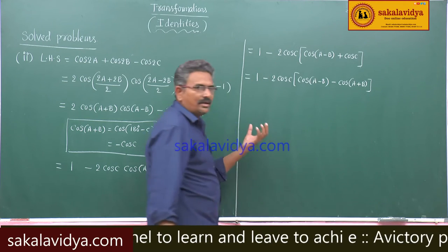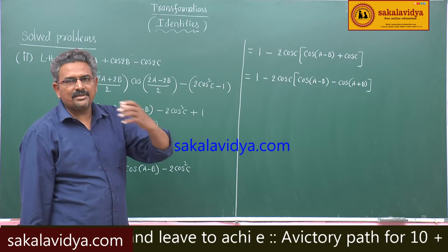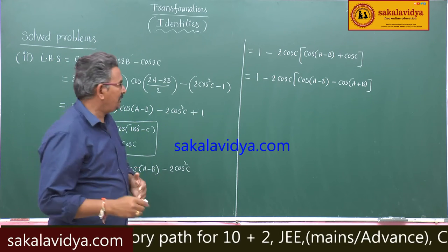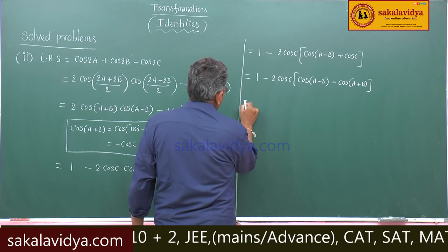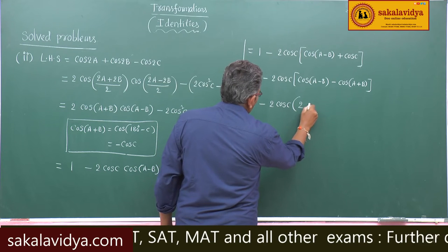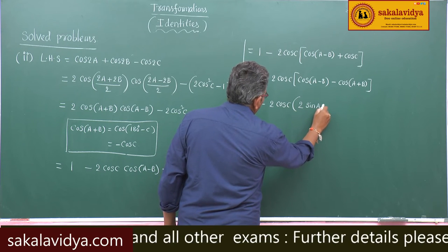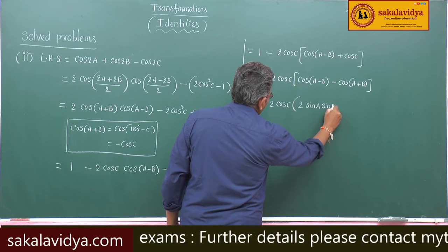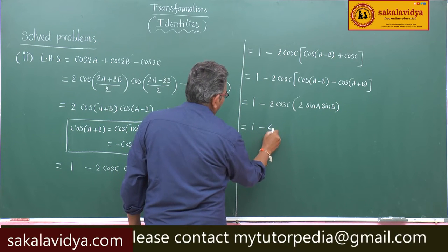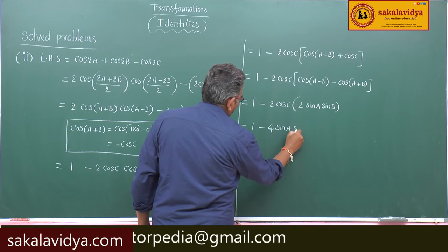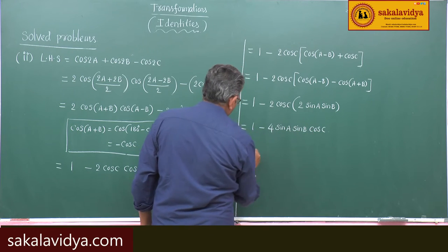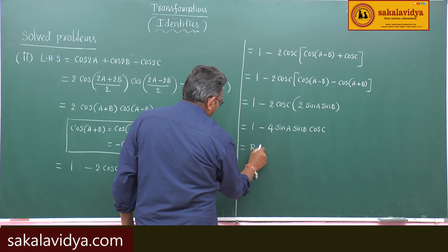We have the formula: cos(A−B) minus cos(A+B) equals 2sinA sinB. So this equals 1 minus 2cosC into 2sinA sinB, which equals 1 minus 4sinA sinB cosC. This is the right hand side.